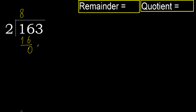Next. Bring down 3. 2 multiplied by 2 is 4, which is greater. Multiply by 1 is 2, which is not greater.